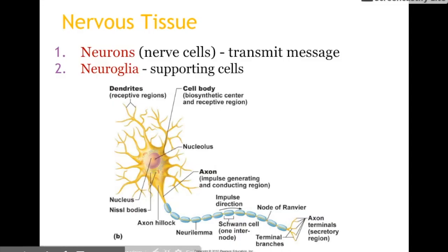We're going to begin today by looking at nervous tissue. Tissue is made up of cells, so nervous tissue is made up of a variety of different cell types. We have these two broad categories: neurons and neuroglia. Neurons are the cells responsible for getting the signal sent either to the CNS or away from the CNS, and processing information in the CNS itself. Neuroglia are there to make sure it can all go smoothly.